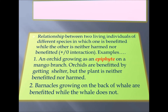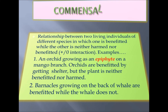Next is commensalism, from chapter 13. It is the relationship between two living individuals of different species in which one is benefited while the other is neither harmed nor benefited, i.e. a plus-zero interaction. Example: an orchid growing as an epiphyte on a mango branch — the orchid is benefited by getting shelter, but the mango plant is neither benefited nor harmed.